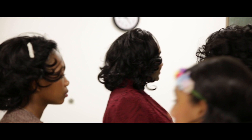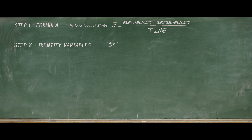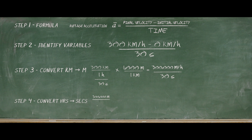Alright, let's get to work. We start with our formula: average acceleration equals final velocity minus initial velocity over time. We fill in our formula: 300 kilometers per hour minus zero kilometers per hour over 30 seconds. Since the pilot needs our response in meters and seconds, we know that one kilometer equals 1,000 meters. So once we multiply that, we get 300,000 meters per hour. Correct. Now we do 300,000 meters per hour over one, and we know that one hour has 60 minutes and one minute has 60 seconds. So now we have 300,000 meters over 3,600 seconds.